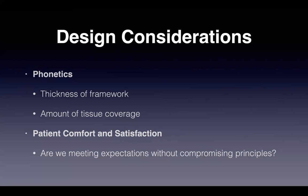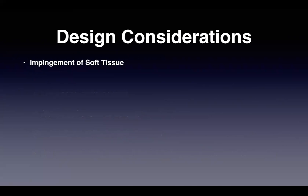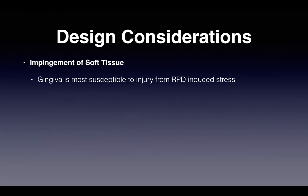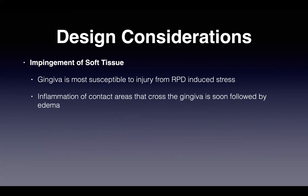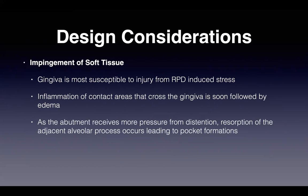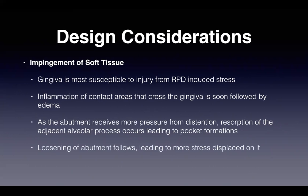An important design consideration is soft tissue impingement. Greater attention should be paid to design principles that minimize the risk of tissue injury. The gingiva is most susceptible to injury from RPD-induced stress. Inflammation in areas of contact crossing the gingiva is soon followed by edema; as the structure becomes distended, pressure increases, leading to resorption of the adjacent alveolar process, pocket formation, and loosening of abutment teeth.